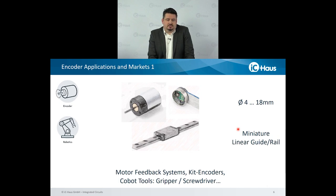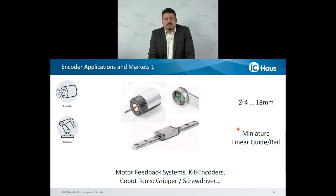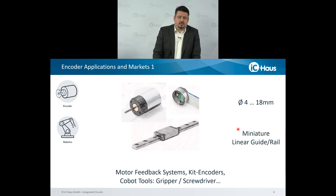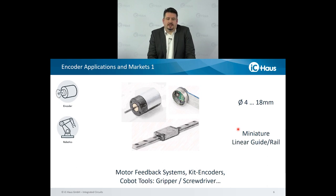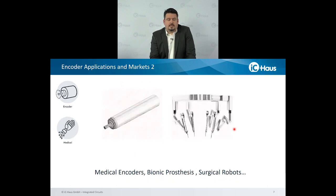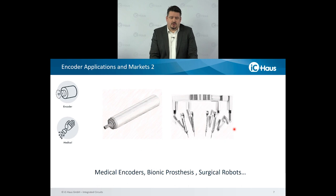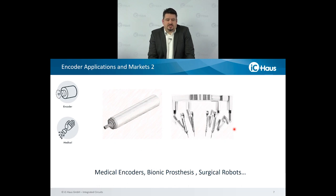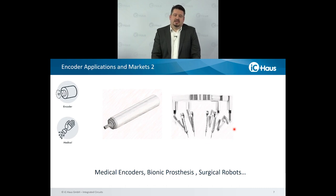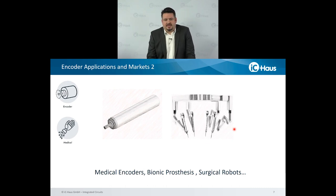Of course, we also see huge requests for kit encoders, especially in robotics, and when it comes to cobots — down to the end of the arm or joint — there are also some grippers, screwdrivers, which are now implementing sensors for detecting position or speed. In the medical markets, we also see a growing demand for very small encoder solutions, incremental ones but also absolute. We see certain growth in bionic prosthesis and surgical robots, because here we have the big advantage with the small sensor and small targets, which fits very nicely in very tight space and housings.